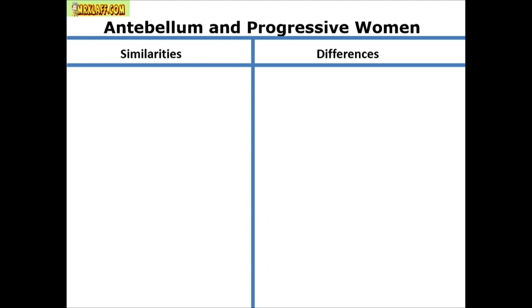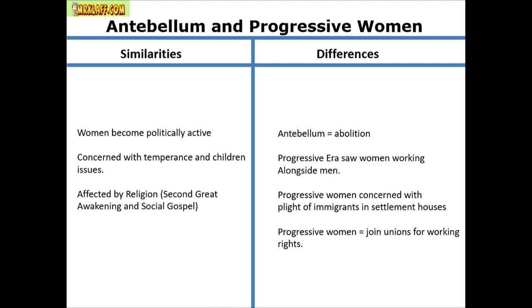Antebellum and Progressive Era women: both become politically active, both are concerned with temperance and children's issues, and both are affected by religion. The Second Great Awakening drives the antebellum women's movement, while the social gospel movement drives the Progressive Era — churches using charity for immigrants in big cities, like Jane Addams and Hull House. Differences: abolition wouldn't be an issue for Progressive women; Progressive women work alongside men in factories, join unions, and some even lead unions.